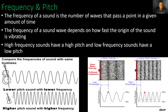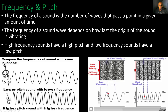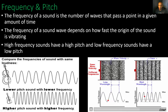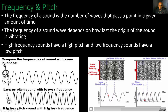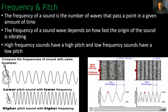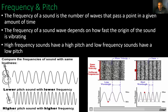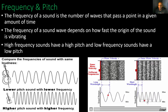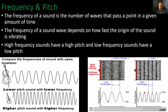Looking at another example — this wave has a lower frequency because fewer waves pass through in a certain amount of time, giving it a lower pitch. This other wave has more waves passing through in the same amount of time, so it has a higher pitch and a higher frequency.